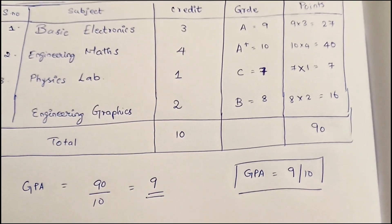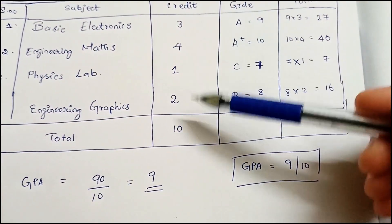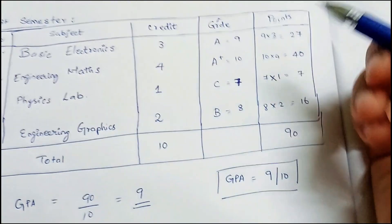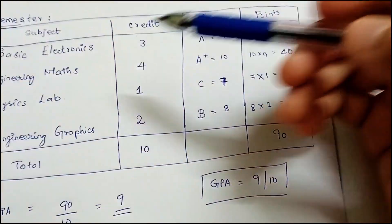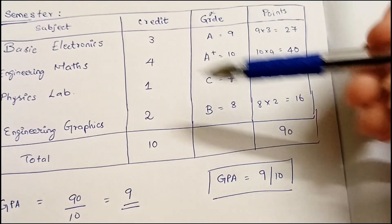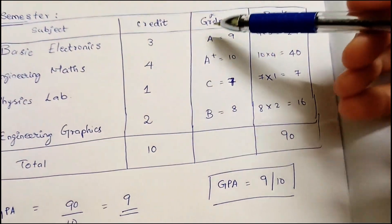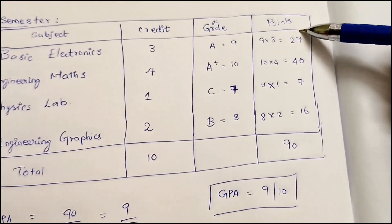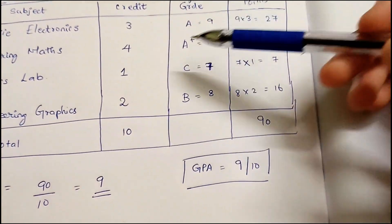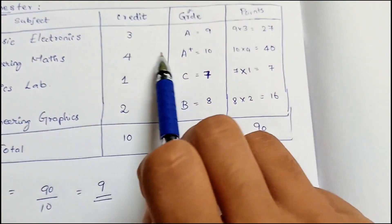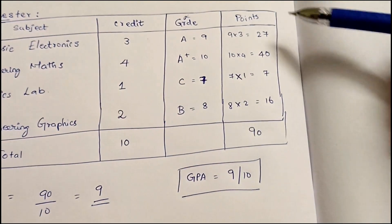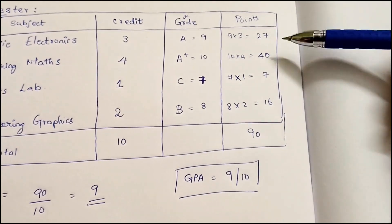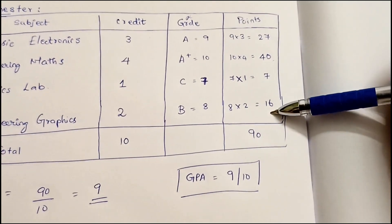In the first semester, for example, if you have four subjects — Basic Electronics, Engineering Maths, Physics Lab, and Engineering Graphics Lab — with credits of three, four, one, and two respectively, and you get grades A+, A, C, and B in those subjects, then A+ is 10 points, A is 9, C is 7, and B is 8. The points are calculated by multiplying grade points by credits: Basic Electronics gives 9 × 3 = 27, Maths gives 10 × 4 = 40, Physics Lab gives 7 × 1 = 7, and Graphics Lab gives 8 × 2 = 16.